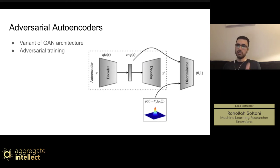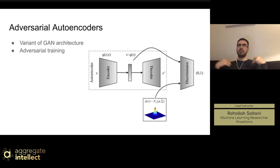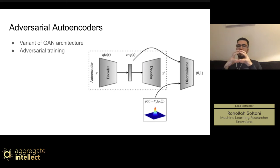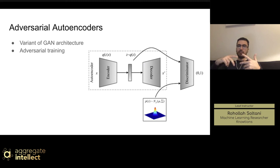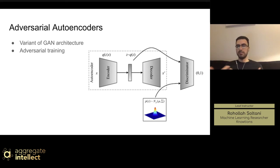The cool thing about the adversarial autoencoder is that the prior doesn't have to be Gaussian — it can be anything you want. It can be any kind of distribution you define. For example, the prior could be a circle shape, and then the discriminator will enforce the embedding to match that shape. You can play with it and have different kinds of restrictions or regularizations on top of the embedding.